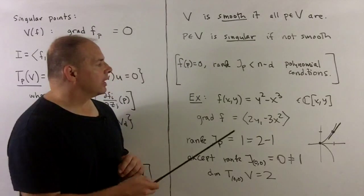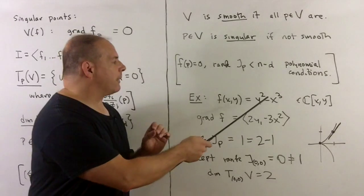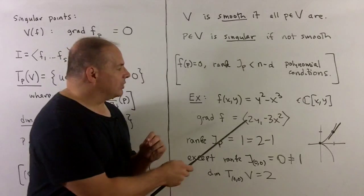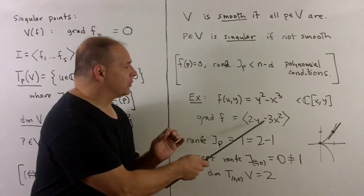For an example, let's consider our usual y² - x³ = 0 in two-space. We take the gradient and get (2y, -3x²).